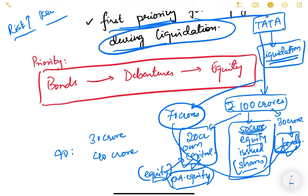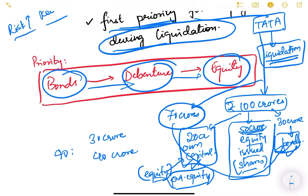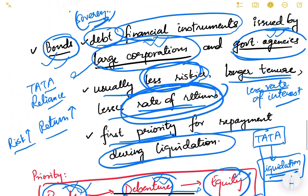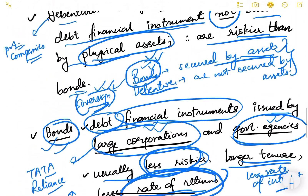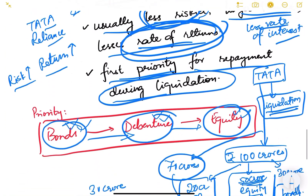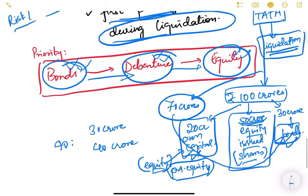So during repayment in liquidation, priority is always given to bonds first, then debentures, and then equity. I hope you have understood the basics of debt financial markets. We are going to dive deeper and learn about different kinds of debt instruments. Thank you.